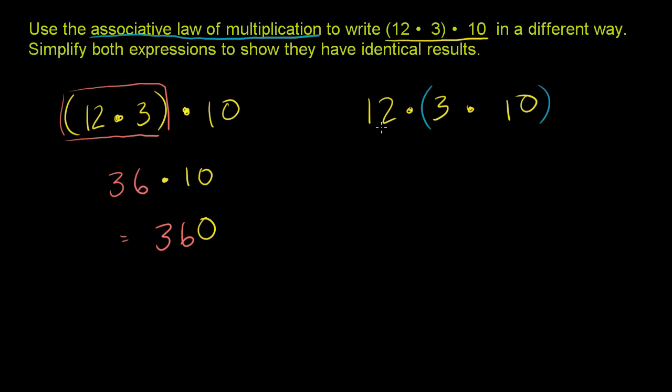And we're going to get the exact same answer as if we multiply the 12 times the 3, and then the 10. So let's just verify it for ourselves. So 3 times 10. 3 times 10 is 30. And we still want to multiply the 12 times that. And what's 12 times 30?